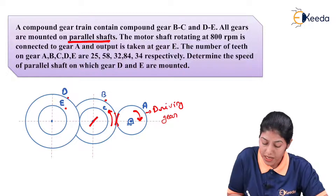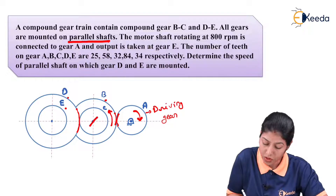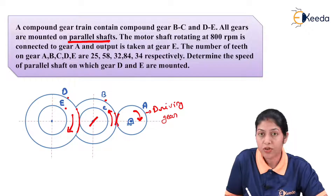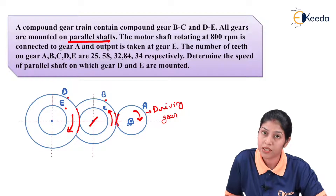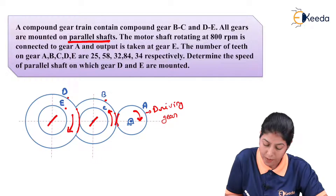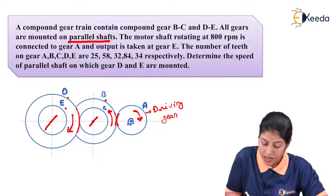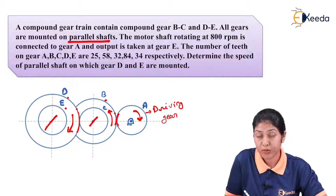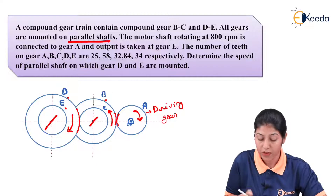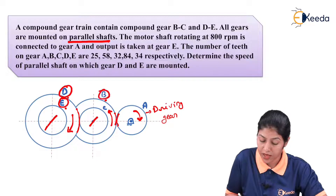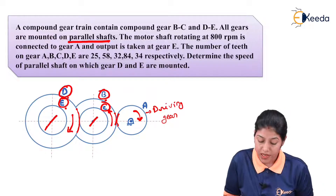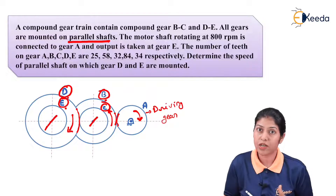Gear C is in meshing condition with gear D of the compound gear DE. In whatever direction gear C is rotating, opposite to that gear D will rotate. Gear D is in compound with gear E — they are mounted on the same shaft. So in whatever direction gear D is rotating, gear E will rotate in the same direction with the same speed. Therefore, the speed of gear D and E will be the same, and the speed of gear B and gear C will also be the same.